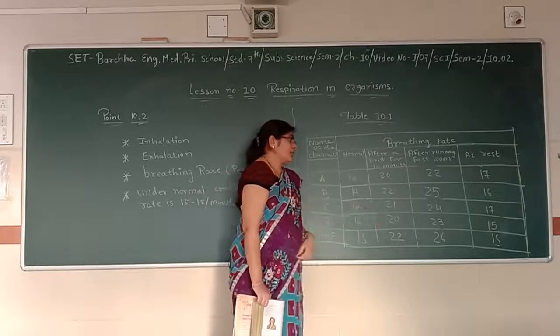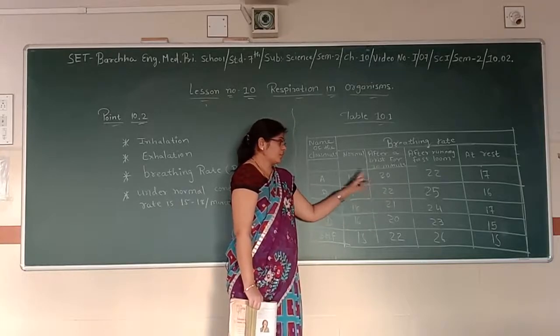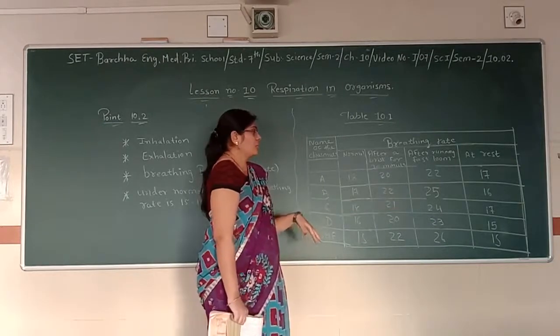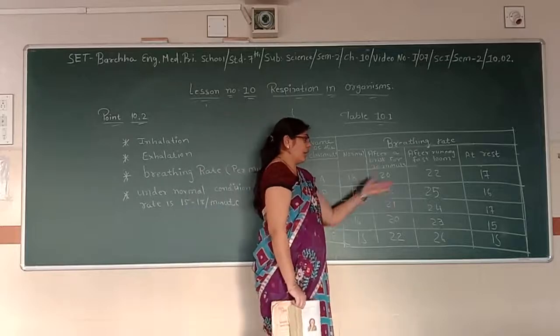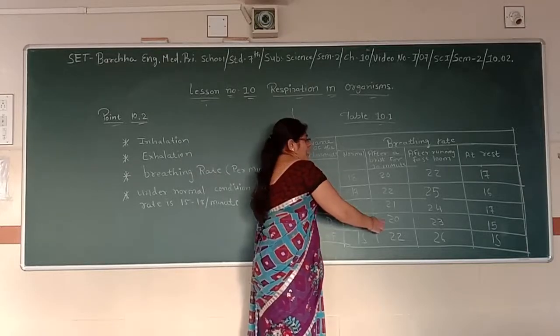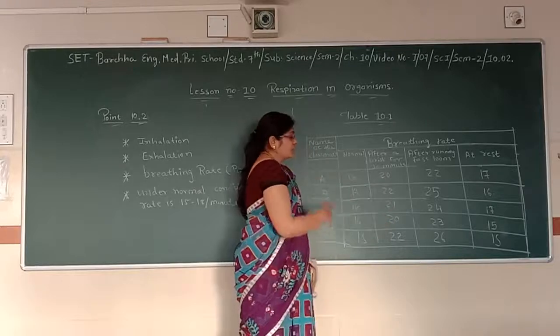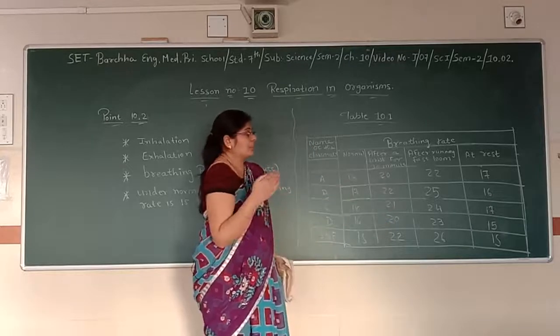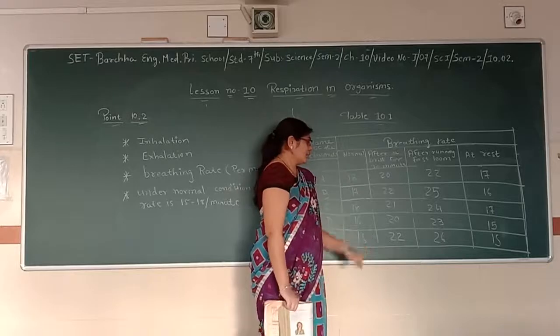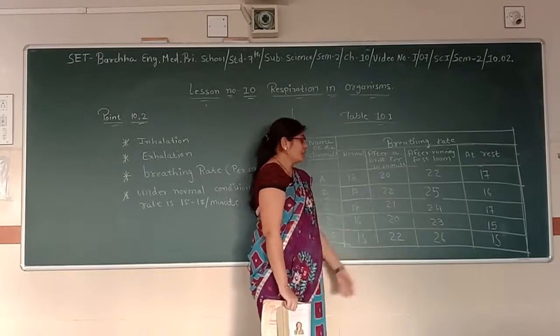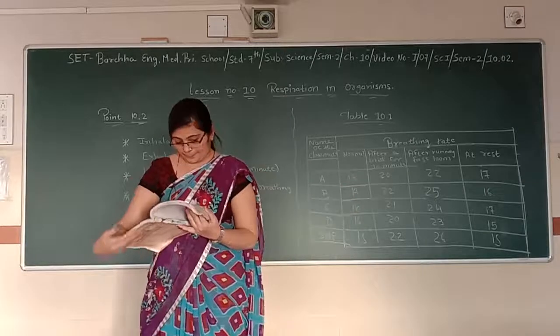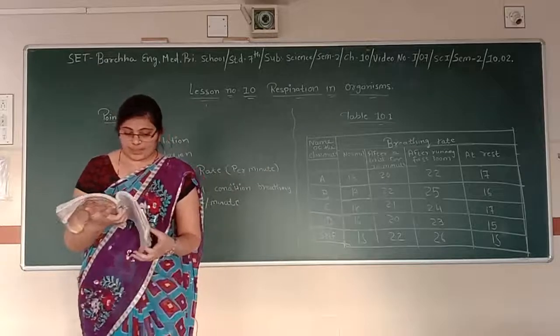Similarly, C, normal rate is 18. After a walk, after a brisk walk, it's 21. Then, when after running fast of 100 meter, it reaches up to 24. And, then, at rest, it normalizes up to 17. D is taking a walk, the normal rate is 16. After taking a walk, 10 minutes, 20. When it is run, it becomes 23, increased up to 23. And, when it did take rest, it normalizes up to 15. Now, about myself. My breathing rate is 15. When I take a walk, it increases up to 22. When I run fast, it becomes 26. And, when I take a rest, it again comes to 15.